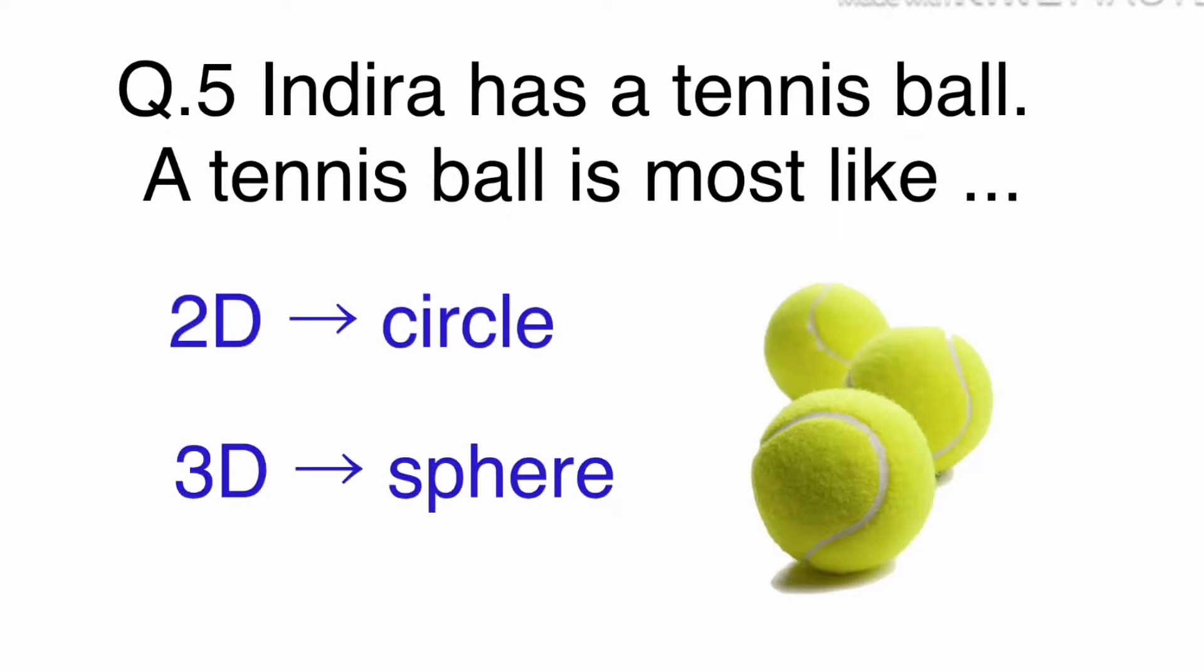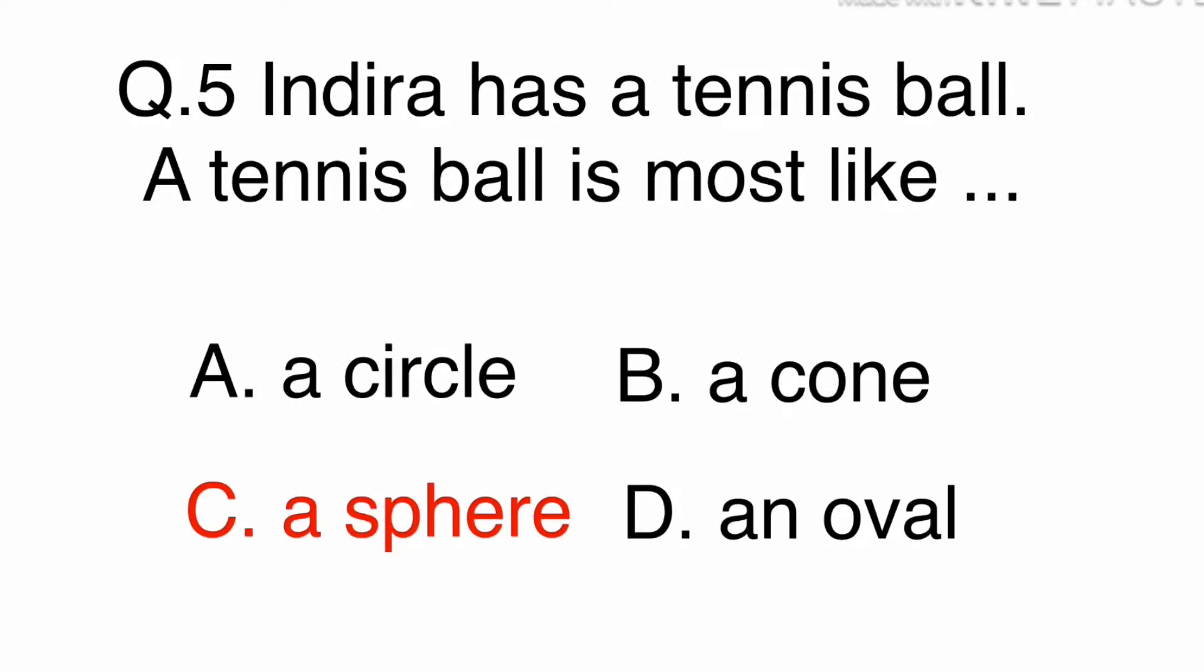A tennis ball is most like a sphere shape. It looks like a circle when you draw it on paper, but its 3D shape is a sphere. The answer is C. A sphere.